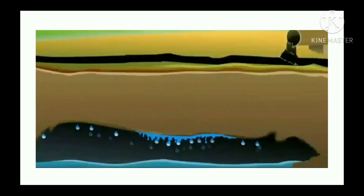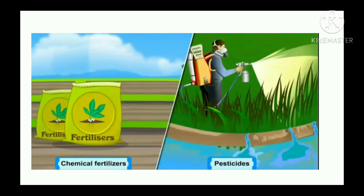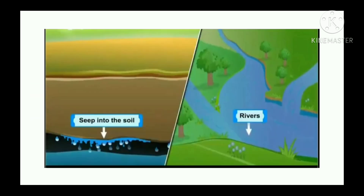If water from such polluted sources keeps soaking into the soil, the soil becomes infertile — meaning unable to grow crops, so crops will not grow in that soil. Chemical fertilizers and pesticides are used on a large scale for agriculture. They seep into the soil or flow into rivers with rainwater, and are responsible for soil pollution.